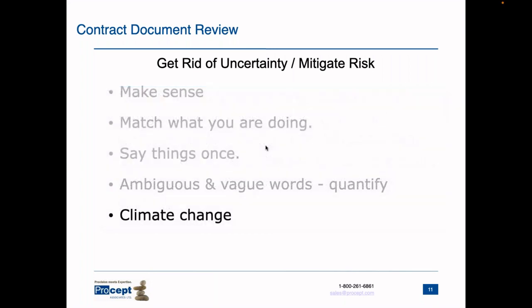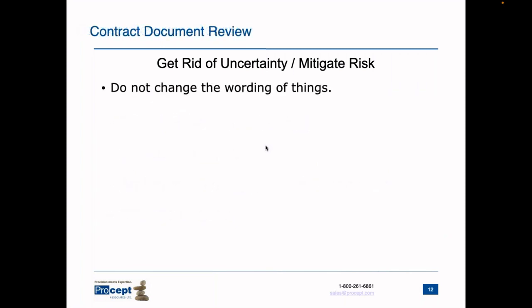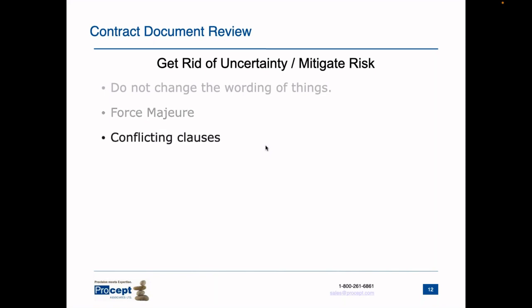Do not use the supposed effects of climate change in your contract, as no one can predict the future. Be careful about wording — you may find a clause that talks about 'weather,' then another talking about 'storms.' Are they the same thing? Look at your force majeure clause: is it suitable for your project and location, and is it clear as to what is and is not covered? Look for any clauses that contradict other clauses, remembering that cut-and-paste may have caused that. Open-ended clauses that pass risk to the contractor mean they'll add a high contingency — and you can't predict the future, so they're essentially guessing, which costs the owner a lot of money.